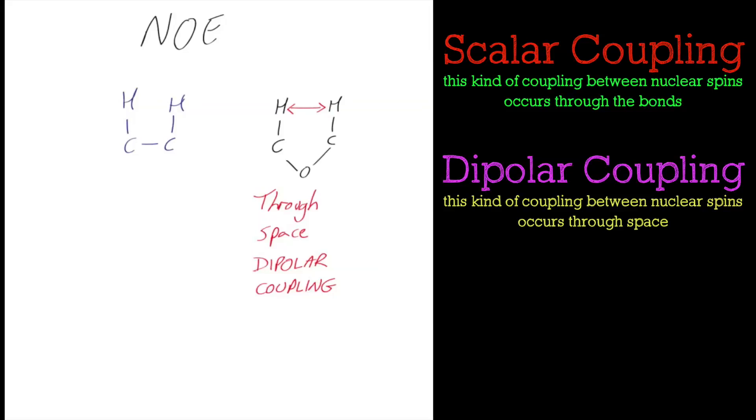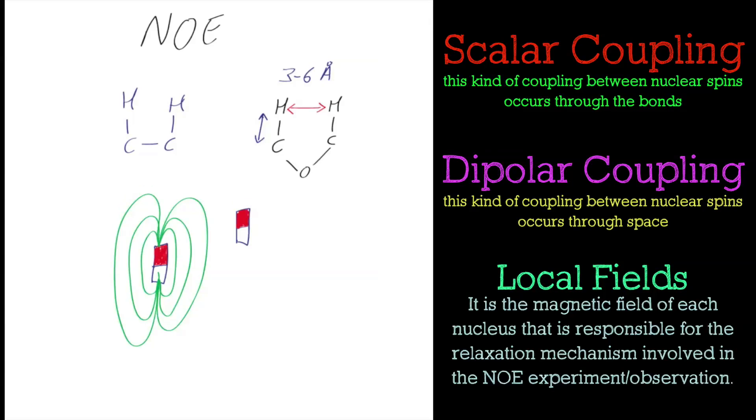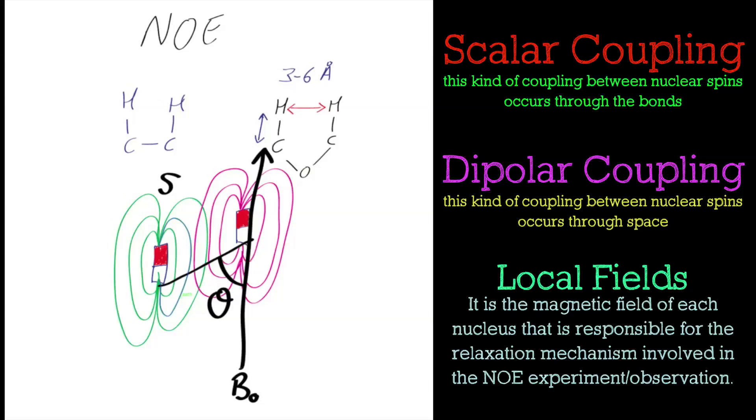It's a through-space interaction, a dipolar coupling. This restriction might seem that we're quite limited, but it's actually quite an advantage, especially when you're looking at the interaction of secondary or tertiary structures in proteins or even small molecule characterization looking at stereochemistry. The actual interaction is purely dominated by the local fields of the nucleus.